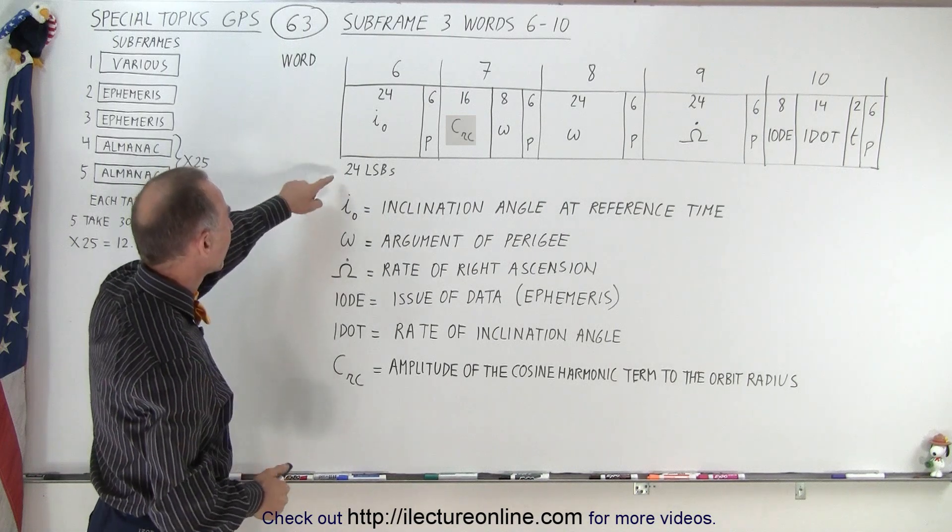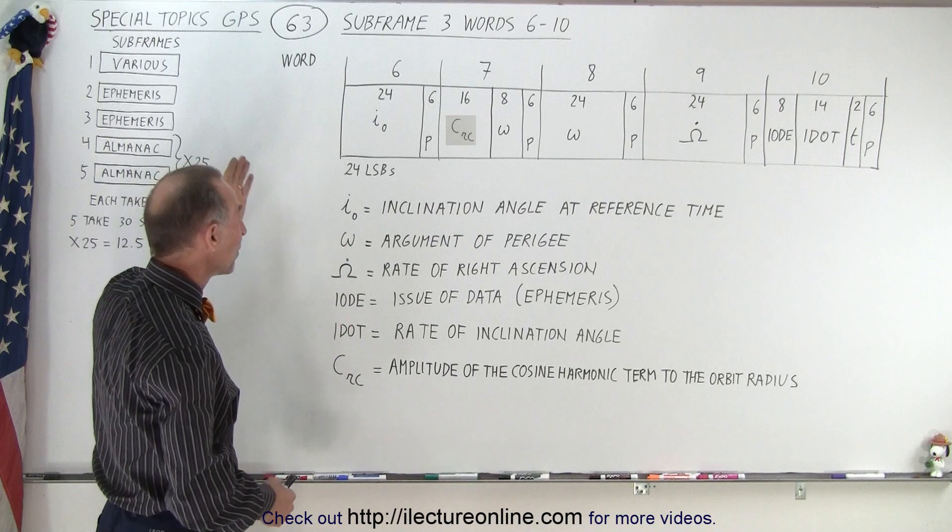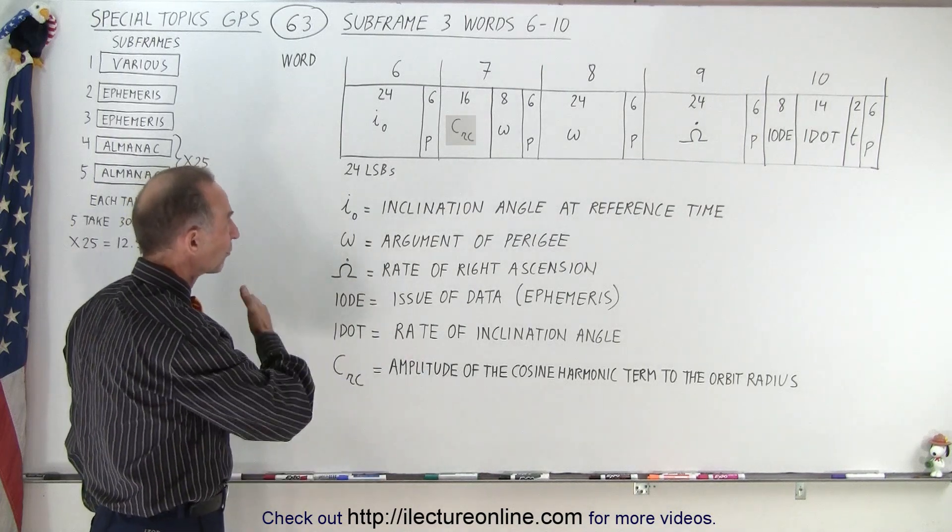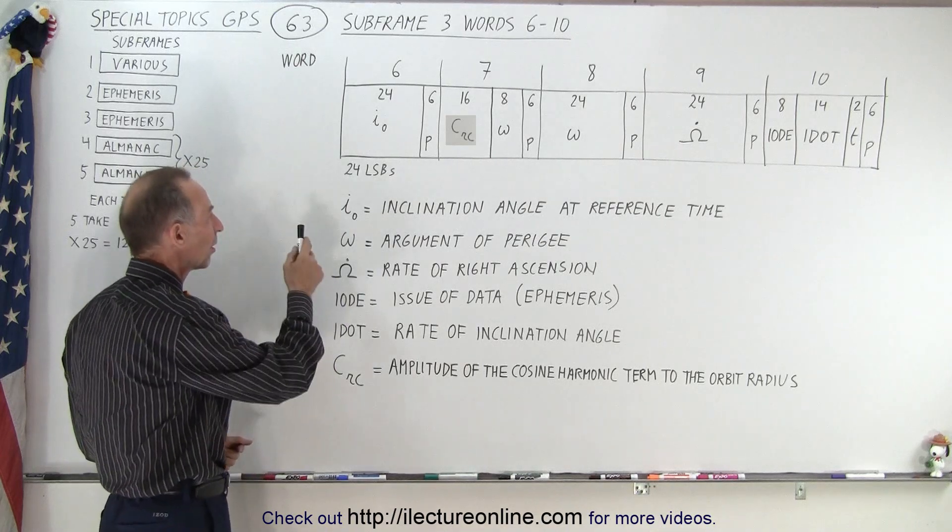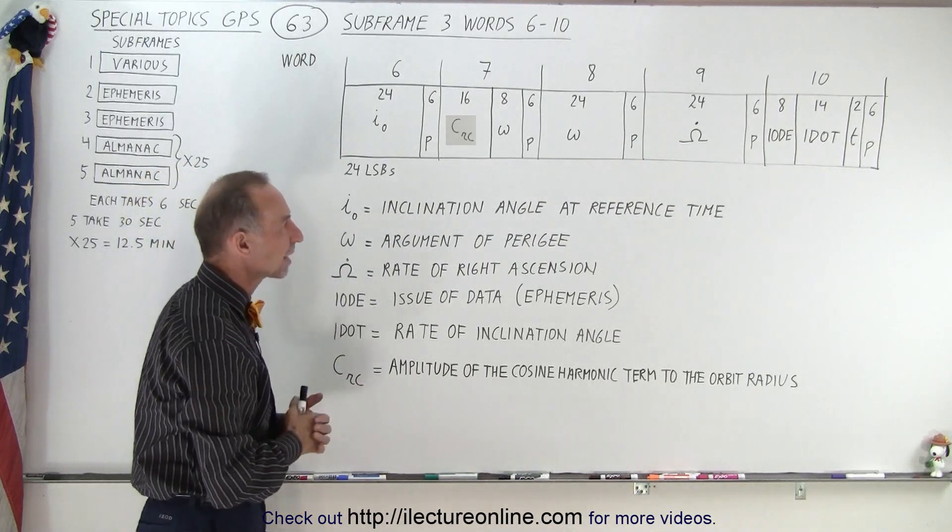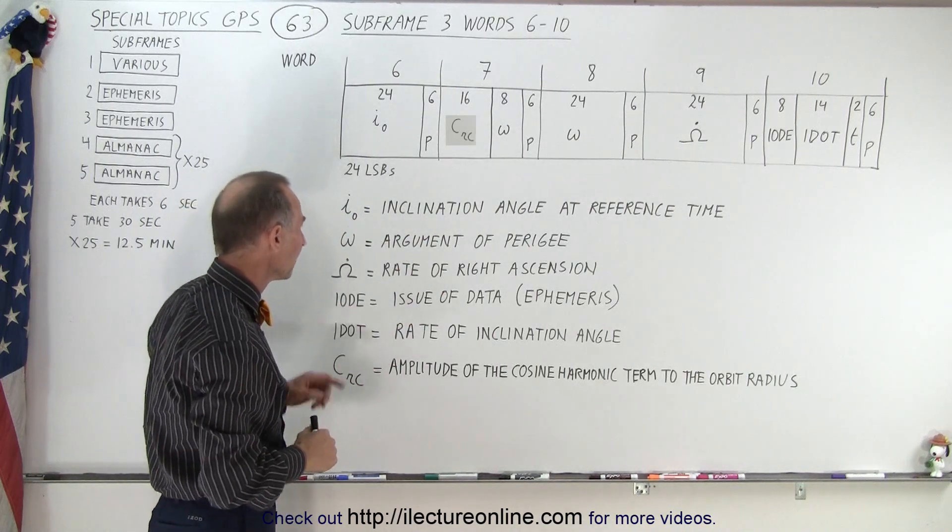And yes, indeed, here are the missing 24 bits. We saw the first eight MSBs in, I believe it was word 5, and here in word 6 we have the 24 LSBs of ISAPNOT, which is the inclination angle after reference time. So the angle of inclination of the satellite at a particular moment in time.